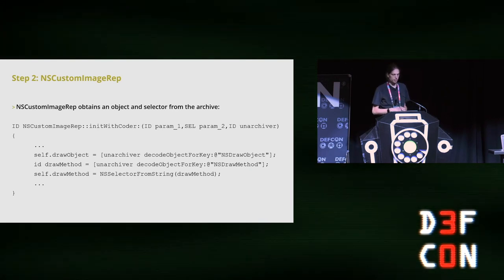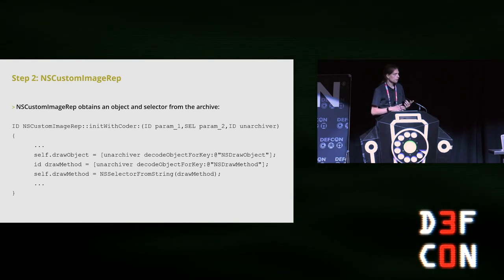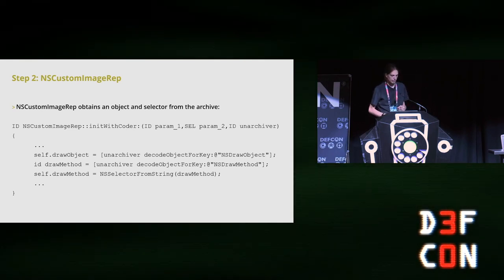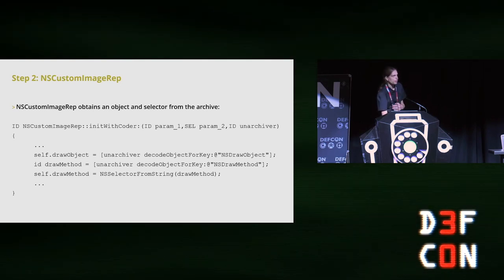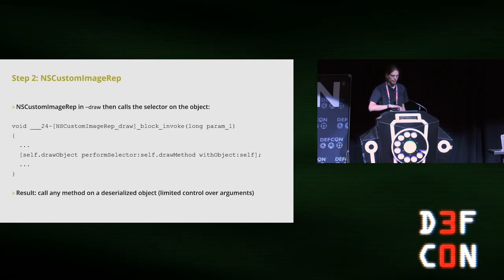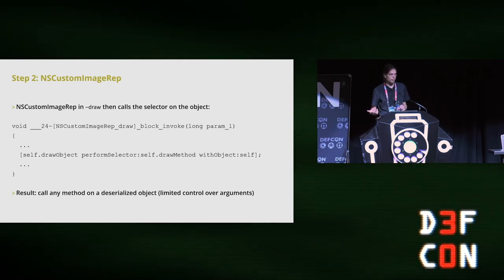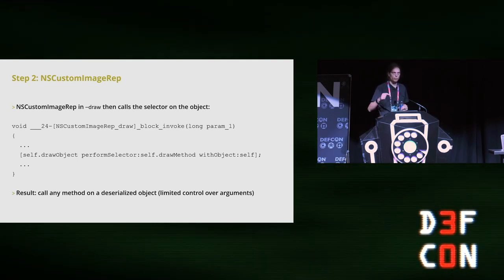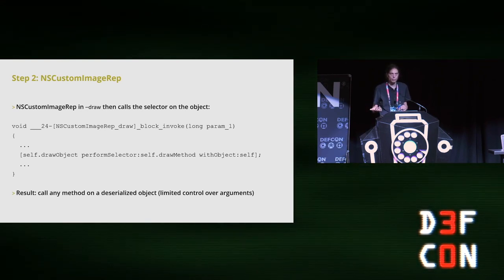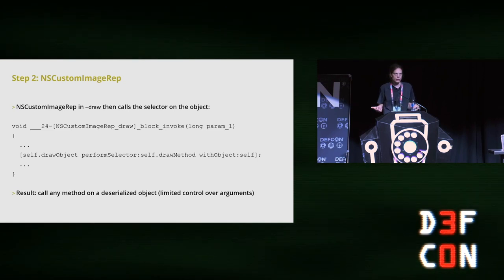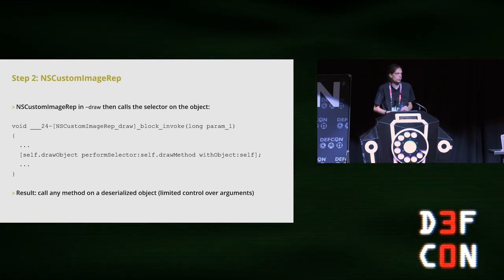The second step uses NSCustomImageWrap. This takes two objects from the archive: a draw object and a draw method, which is basically a selector — something like a function pointer for an Objective-C method, the name of a method. In the draw function of this class, it calls that method on the deserialized object. By combining this with the previous step, where we could call a method with no arguments, we can call the draw method on this object. At this point we can call methods even if they have arguments, though we don't yet have control over those arguments.